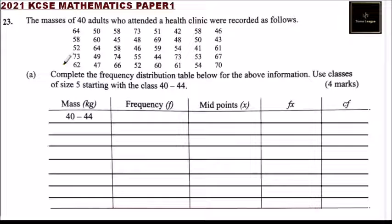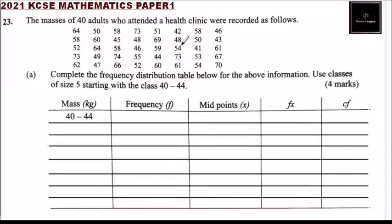This is question number 23. We are told the masses of 40 adults who attended a health clinic were recorded. So we have the data that was collected for those adults that attended a health clinic.